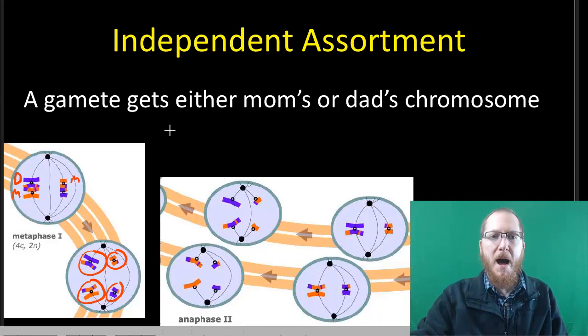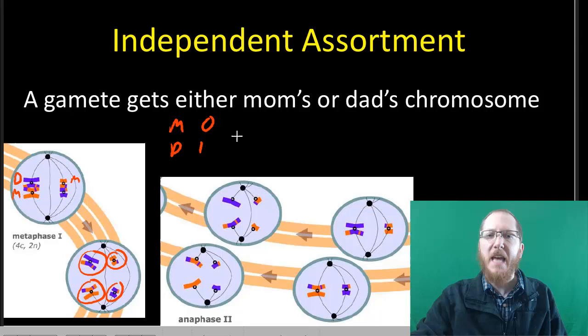If you think of it this way, let's say mom's is the equivalent of a 0 and dad's is the equivalent of a 1. This is kind of like having a phone number that only has 0s and 1s, but it's 23 digits long. So for each of these, we can essentially randomly get either a 1 or a 0.